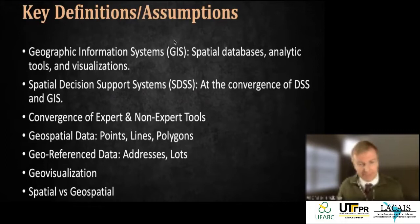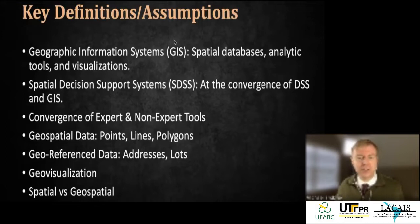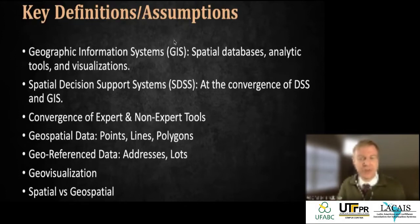A Spatial Decision Support System (SDSS) is the convergence point where DSS and GIS merge. Decision support systems are tools to help individuals, businesses, or policymakers come to a decision. When we incorporate the spatial or geographic aspect, we put the 'S' in front of DSS to get an SDSS. There are also expert tools versus non-expert tools — some require a geospatial expert while others are designed for consumers or business professionals with built-in expert systems or AI.